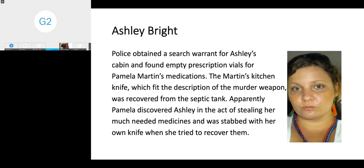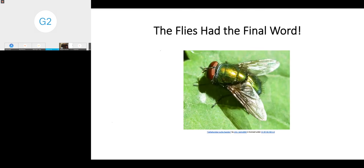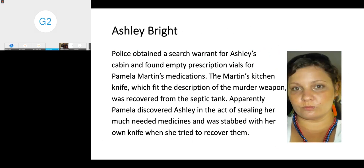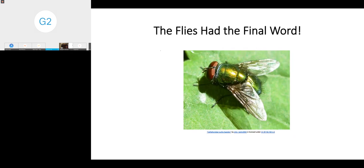Julia Snow had no motive to murder Pamela. Pamela regularly came to the cabin and would stop at the store and stock up. She was friendly with Julia. But Julia recalled that Ashley had come to the store around March 20th and was disheveled and appeared to have bled on her shirt at that time. Ashley Bright was now the suspect. They obtained a search warrant for her cabin. They found empty prescription files for Pamela Martin's medications. In the septic tank, they found a kitchen knife that had belonged to the Martins. It was apparently the murder weapon. The flies had the final word. It was Ashley, it wasn't John.